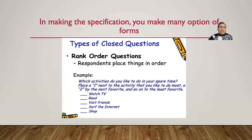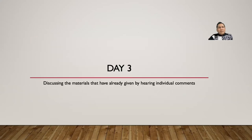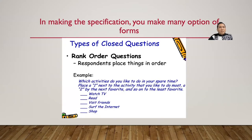Another option type is ranking: put answer options and ask respondents to order them. For example, 'Which activities do you like to do in your spare time?' — respondents rank them, putting number one for the most preferred, like watching TV, visiting friends, or surfing the internet.